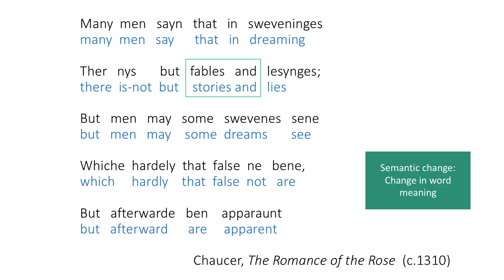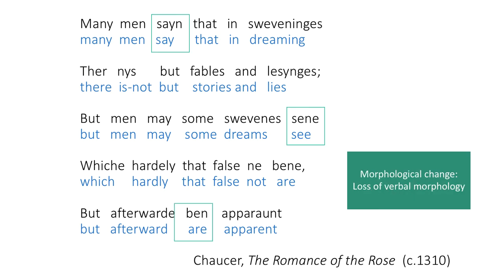You can also see some instances of semantic change, where the meaning of a word changes slightly. For instance, here we have the word 'fables,' which meant a generic story in Middle English, but today it's more of a specific type of story — so we've seen a narrowing of the meaning. We can also see morphological change. Middle English actually had a more complex morphological system, including a marker for plural on verbs. You can see the N on the end of all these words, which does not exist anymore in Modern English.